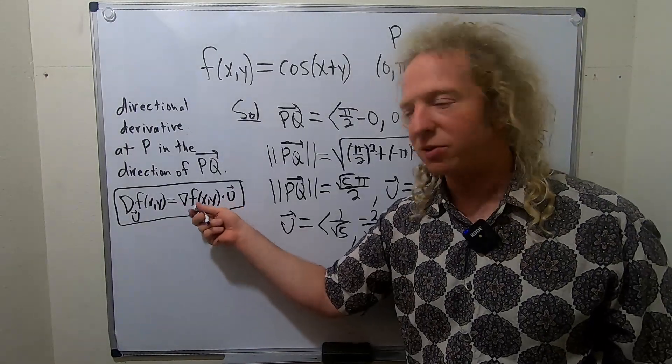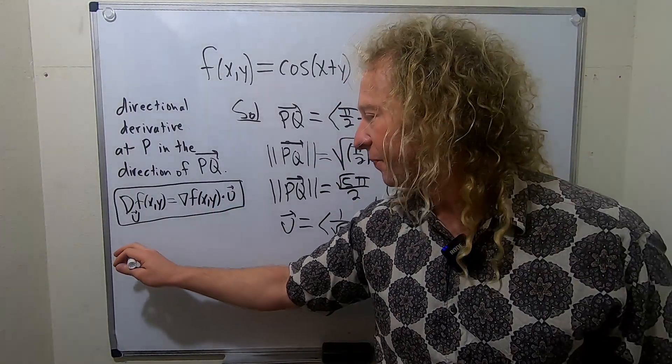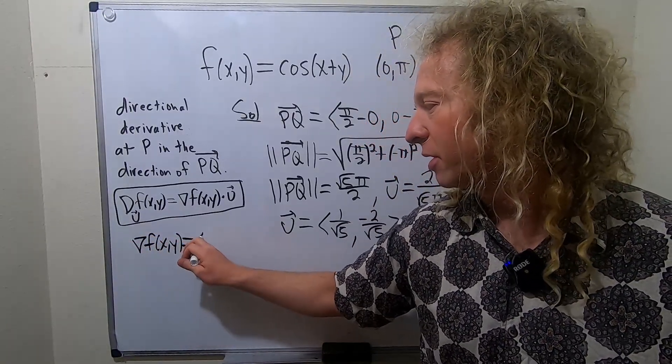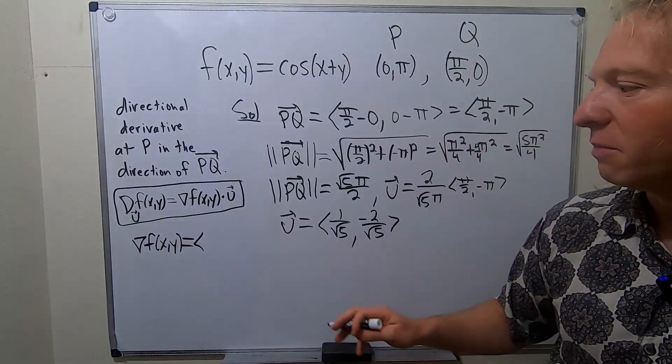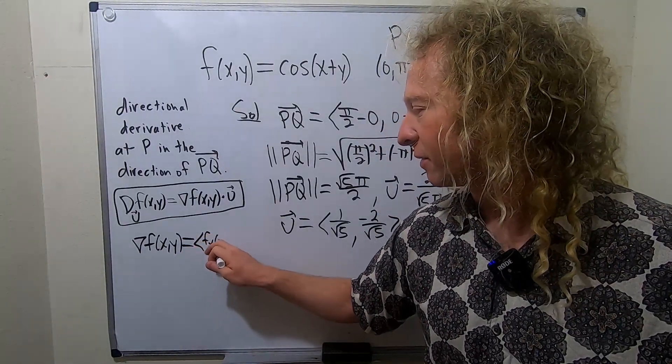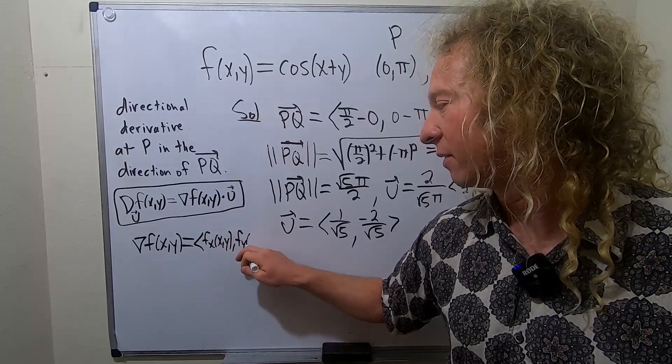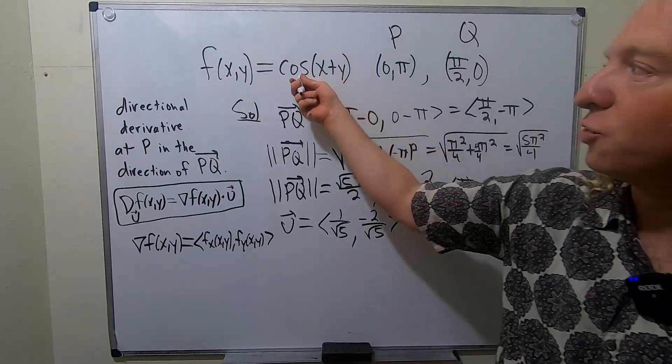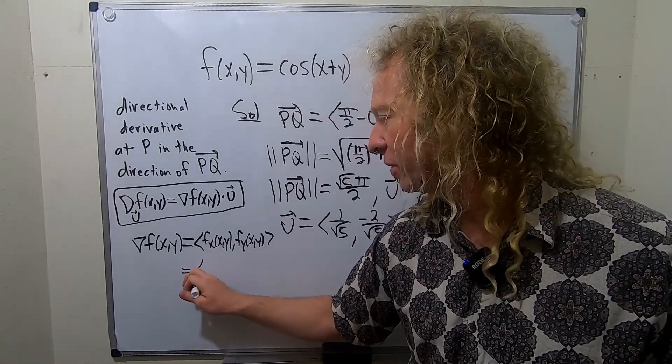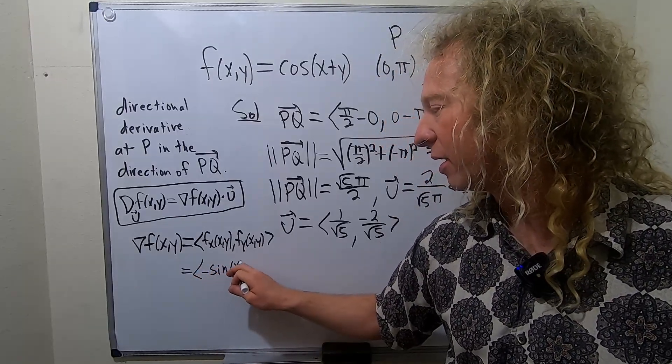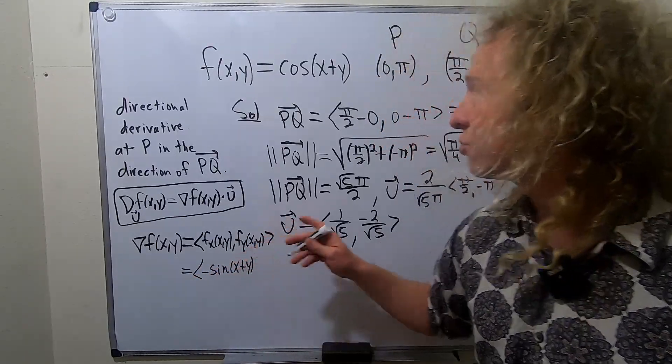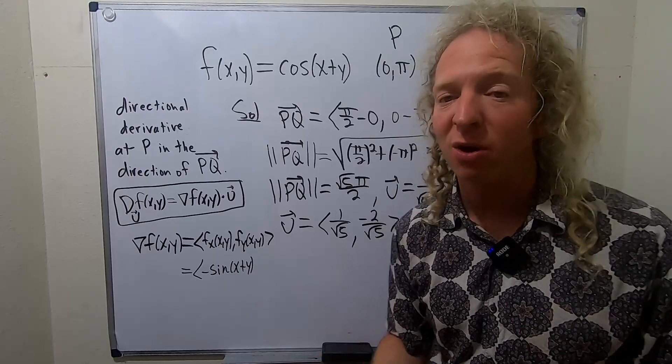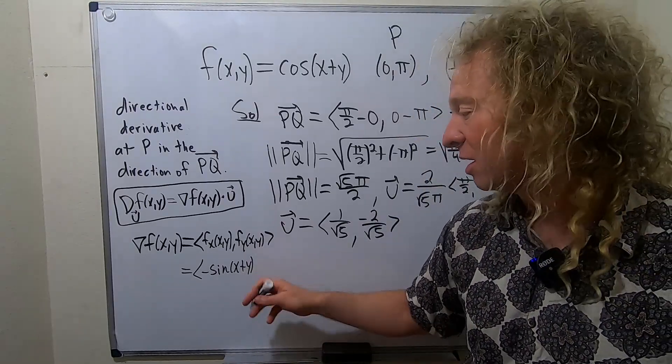Now we should be good. All we have to do now is compute the gradient. The gradient should be pretty easy. The gradient of f - the first component is the partial with respect to x. Remember it's fx and then fy. That's the formula for the gradient vector. The derivative of cosine is negative sine, so we get -sin(x+y) times the derivative of the inside with respect to x. The derivative of x is 1. The derivative of y is 0 because we're differentiating with respect to x.